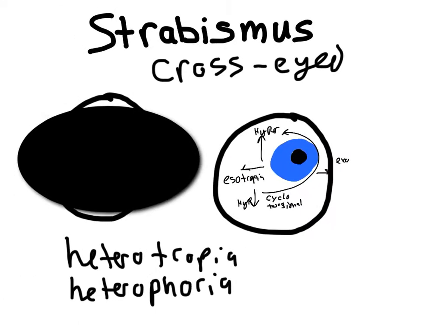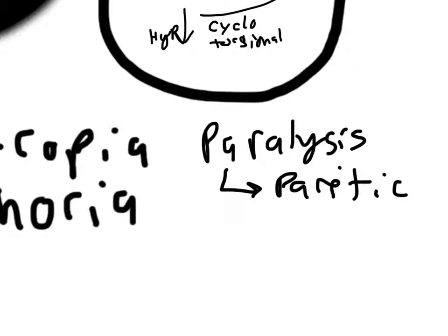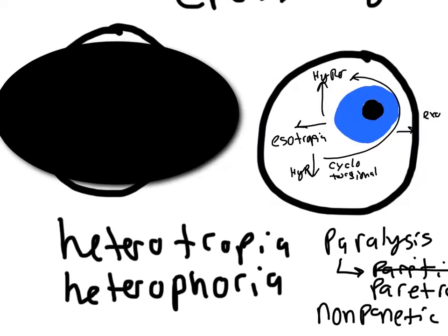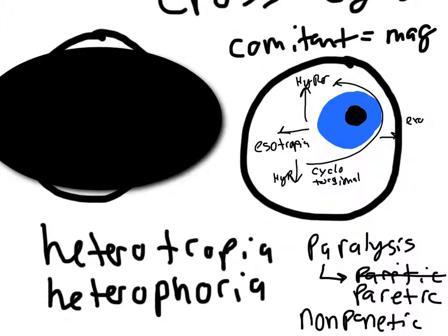Now let's look at a few other classifications. If strabismus is due to a paralysis, we call it paretic (p-a-r-e-t-i-c), and if it's not due to a paralysis, it's termed non-paretic. Also, if the deviated eye maintains the same magnitude of deviation regardless of gaze direction, it's called comitant; if the magnitude varies, it's non-comitant.